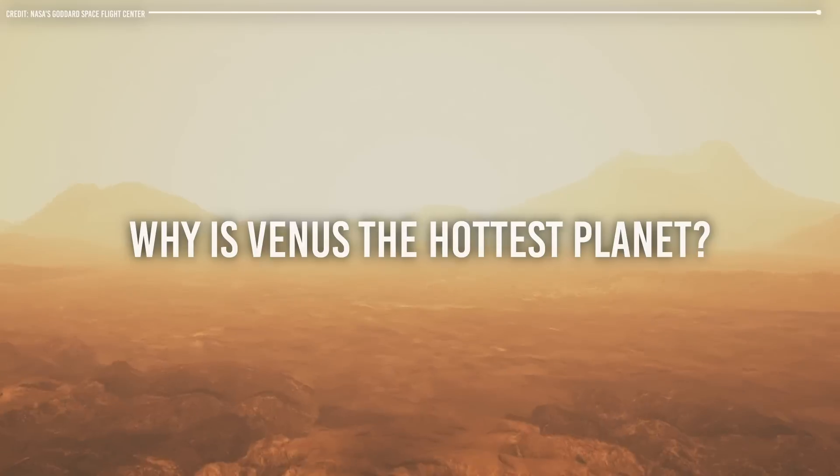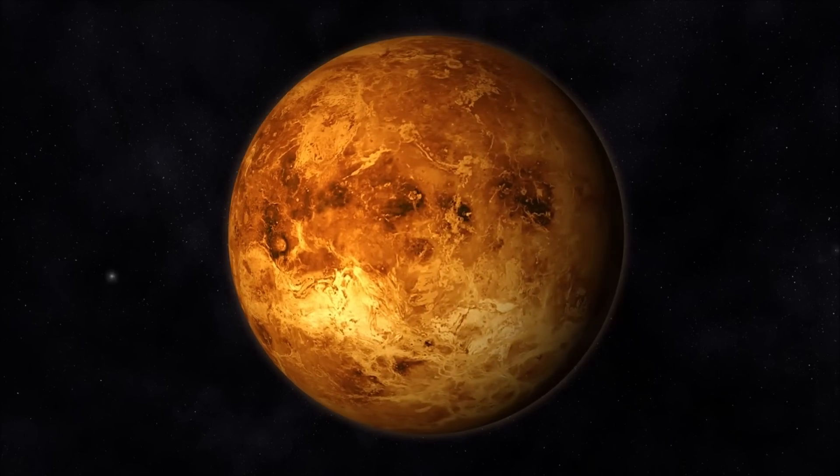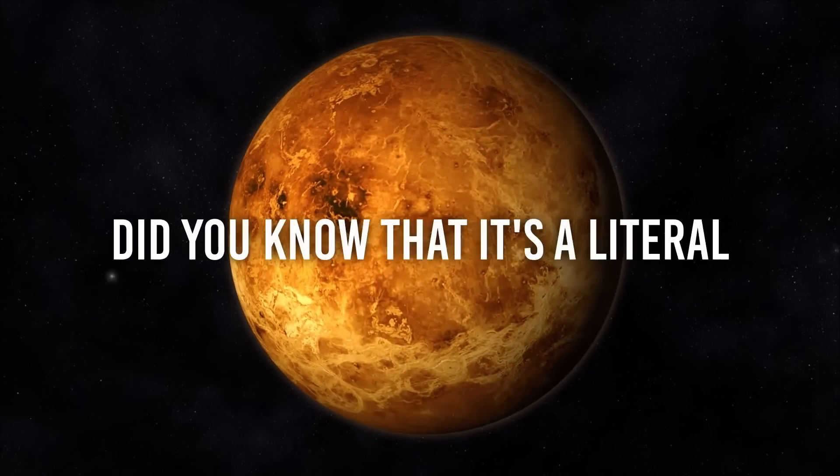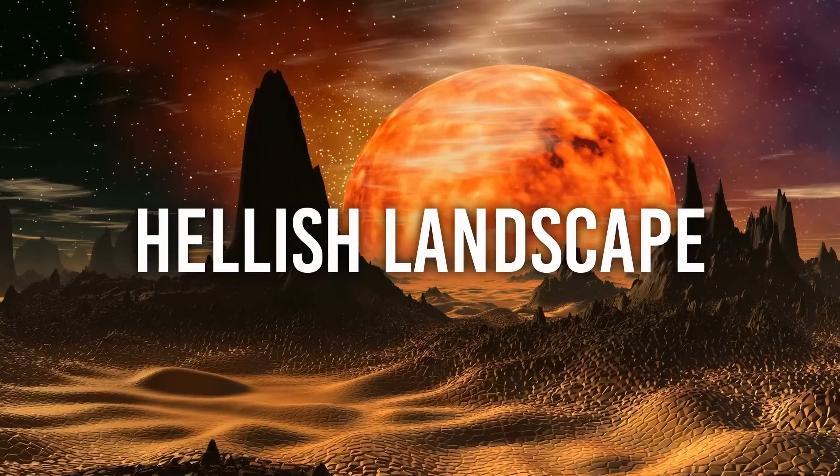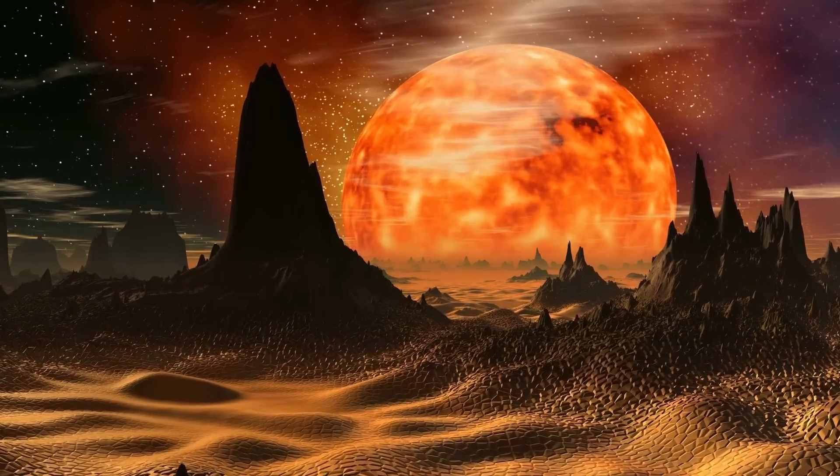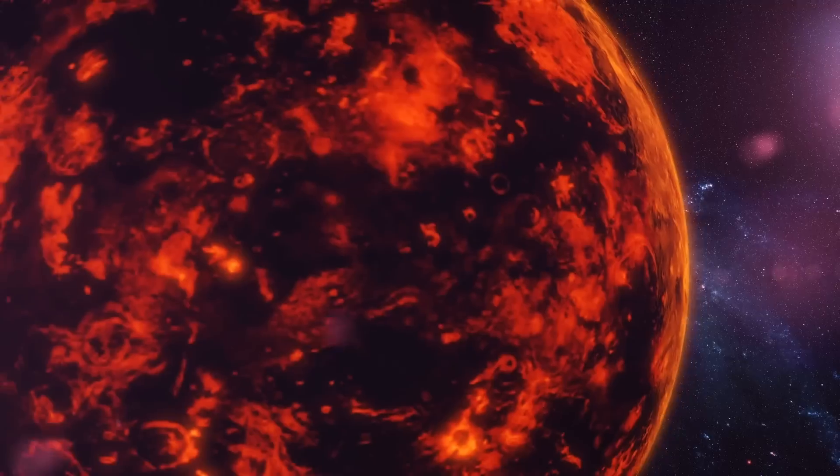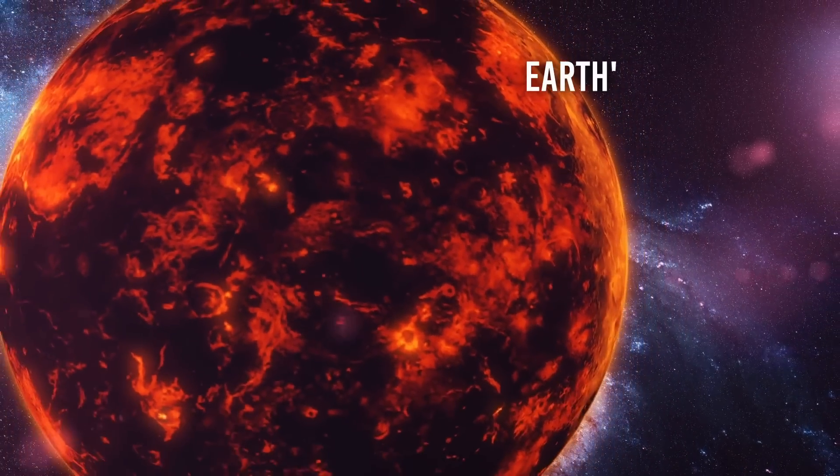Why is Venus the hottest planet? It's not the closest one to the Sun, though. You may have heard that Venus is often referred to as Earth's sister planet. But did you know that it's a literal hellish landscape, with temperatures hot enough to melt lead and crushing atmospheric pressure that can squish you flat? It's safer to say Venus is Earth's evil twin.